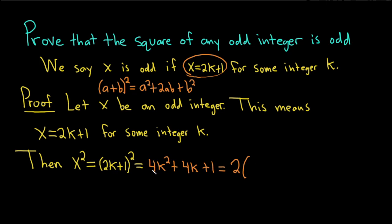Let's see what's left. We're pulling out a 2 from the 4k squared—that's going to leave us with 2k squared. And we're pulling out a 2 from the 4k—that's going to leave us with 2k. And then we still have the plus 1 over here.